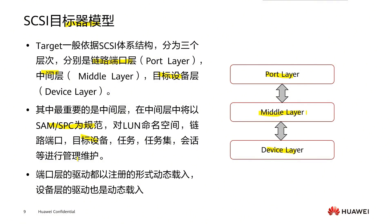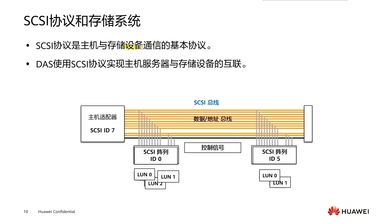In the three-layer architecture, the middle layer is the most important. The SCSI protocol is the basic protocol for communication between the host and storage device. Under normal circumstances, the SCSI protocol is embedded in the device's driver or the onboard logic of the host adapter. SCSI hard drives, SCSI optical drives, SCSI interface scanners, and other SCSI array devices all connect to the host server through the SCSI card and SCSI bus. The SCSI bus is used for data transmission and communication control between the computer motherboard and the connected SCSI device.